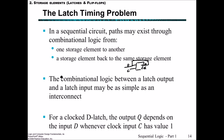Even something as simple as a wire connection between the output Q and the input D could be considered as a combinational logic circuit — it could be as simple as an interconnect, just a wire, or a connection between those without any gates in between. For a clocked D latch, the output Q depends upon the input D whenever the clock C has a value of 1.